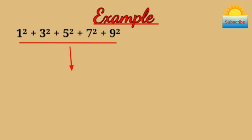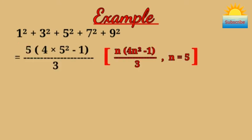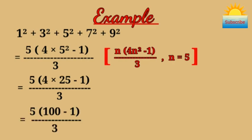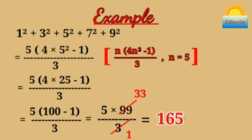So their sum is 5 × (4 × 5² - 1) / 3, which equals 5 × (4 × 25 - 1) / 3, or 5 × (100 - 1) / 3, or 5 × 99 / 3, which equals 165.